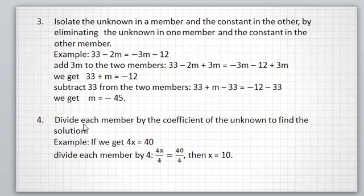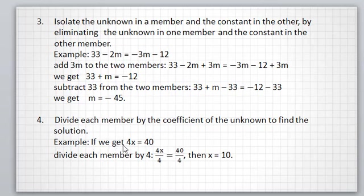Divide each member by the coefficient of the unknown to find the solution. If we have a coefficient different than 0 and different than 1, we divide each member by the coefficient. Example: if we get 4x equal 40, divide each member by 4. We get 4x over 4 equal to 40 over 4, then x equal 10.